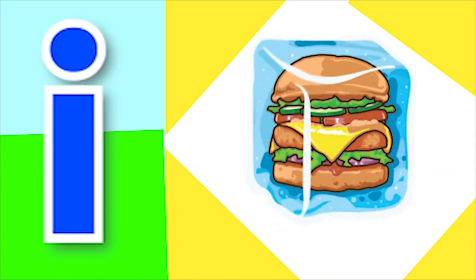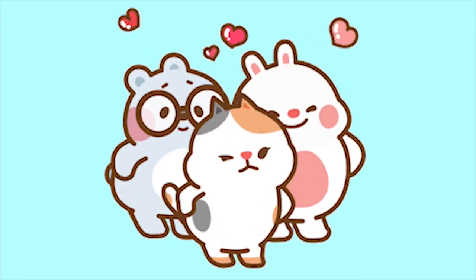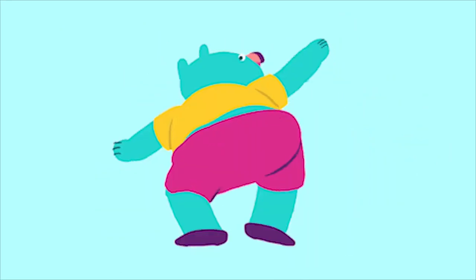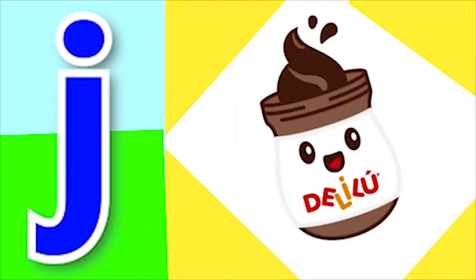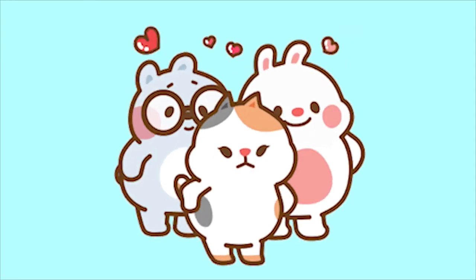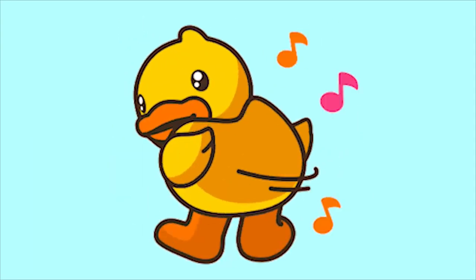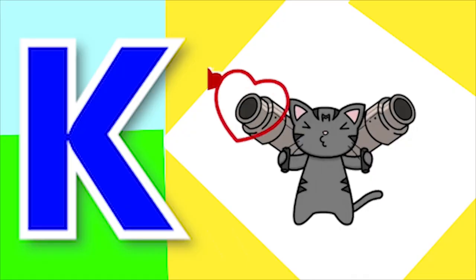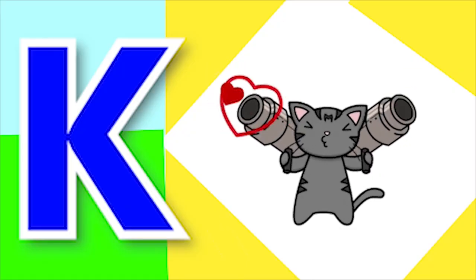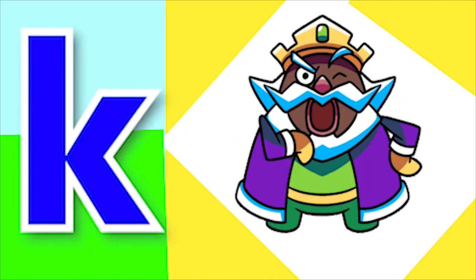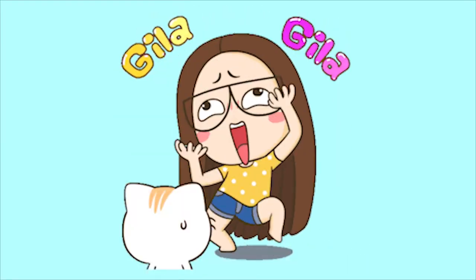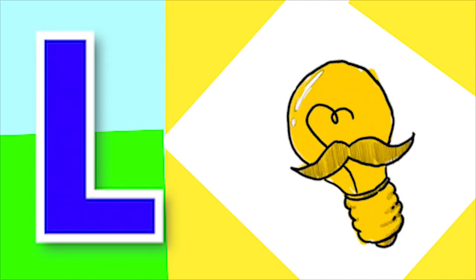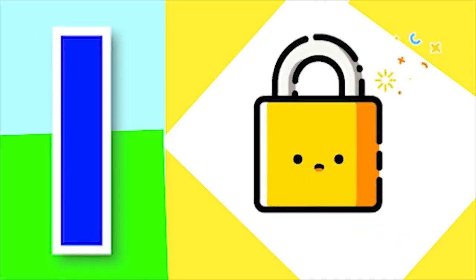I for island, I for ice cube. J for juice and J for jam. K for kitten and K for king. L for lamb and L for lock.